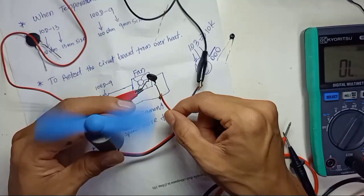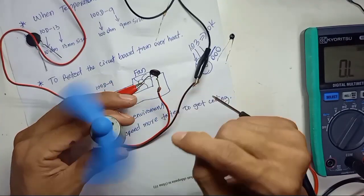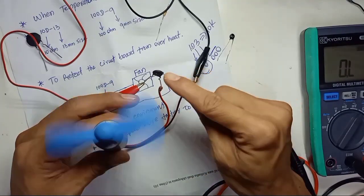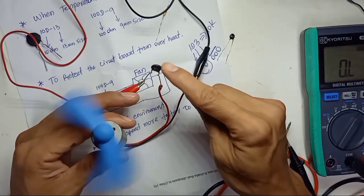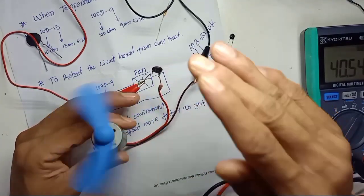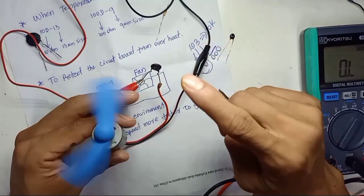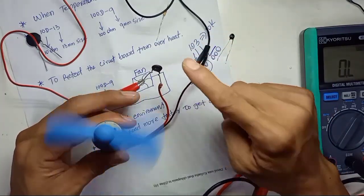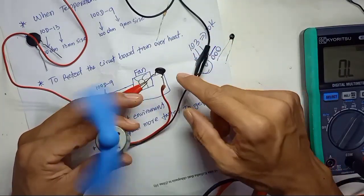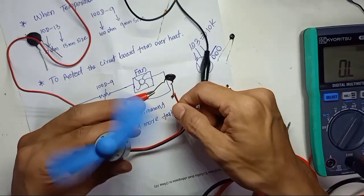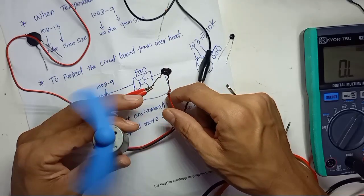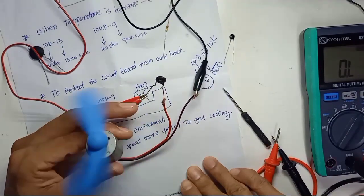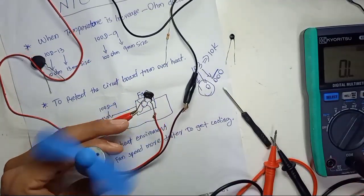The motor has already slowed down because the thermistor has cooled down and the resistance has increased back. This is how the thermistor works. I hope you liked this video — thank you for watching!